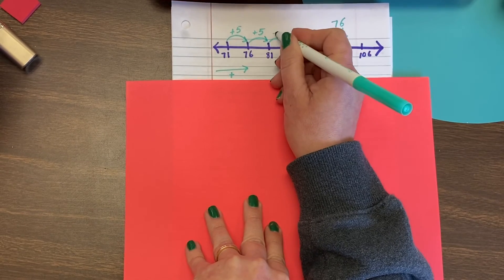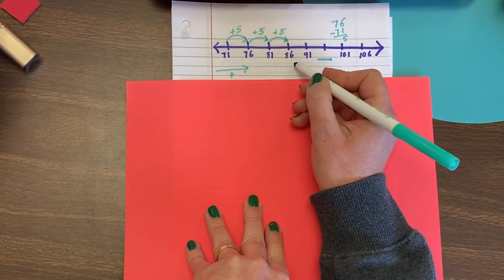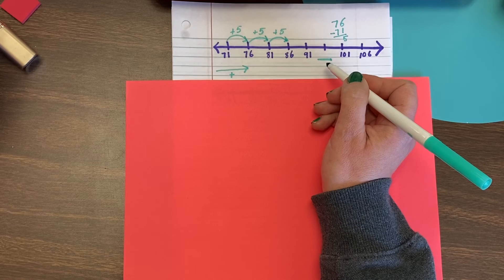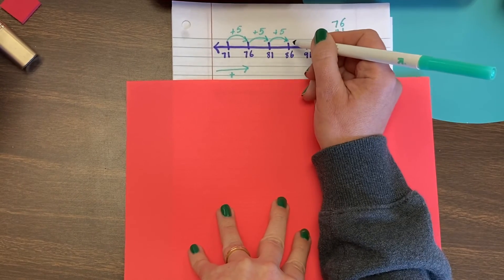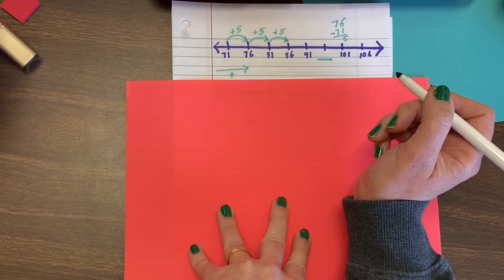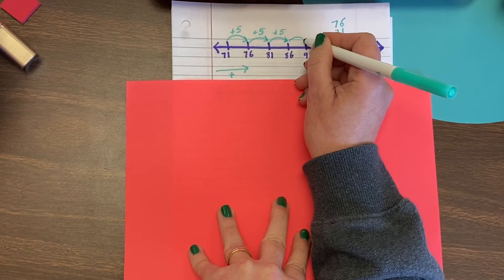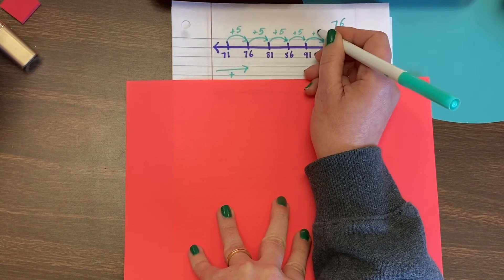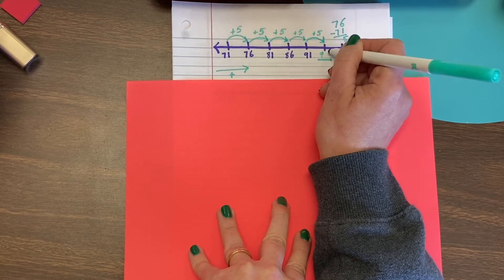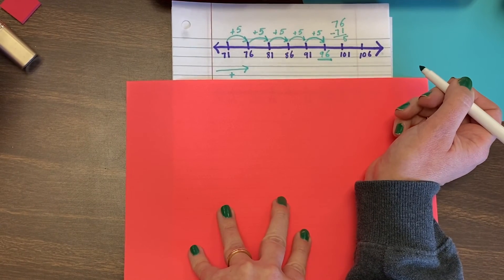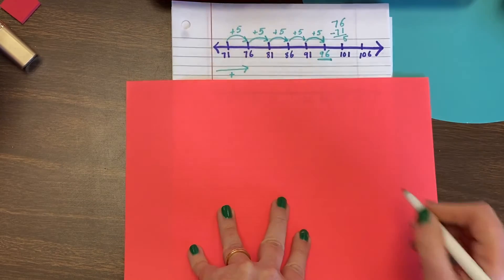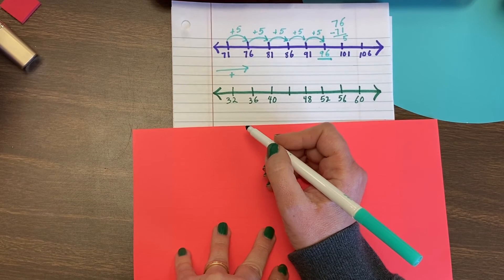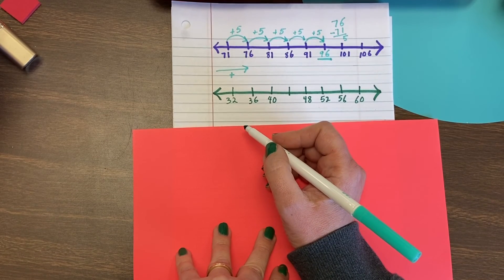81 plus five is 86. So what is my missing number? Hit pause and see if you can figure it out. Well, I do plus five and 91 plus five is what? Did you get 96? That's right, because 96 plus five is 101. And the last one we're going to look at together. Hit pause and try to figure this one out. Hit play when you're ready to move on.